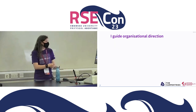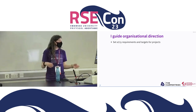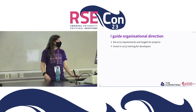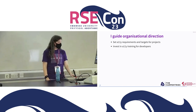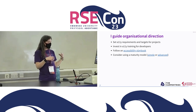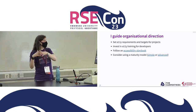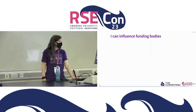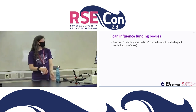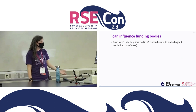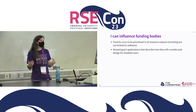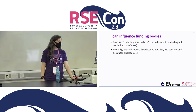If you have enough influence to guide organisational direction, set accessibility requirements and targets for projects or ask your organisation to do so. Invest in accessibility training for developers. Consider following an accessibility playbook or using a maturity model to guide accessibility learning and development in the long term. And if you influence funding bodies, please push for accessibility to be prioritised in all research outputs including but not limited to software, and ask them to reward grant applications that describe how they will consider and design for disabled users.